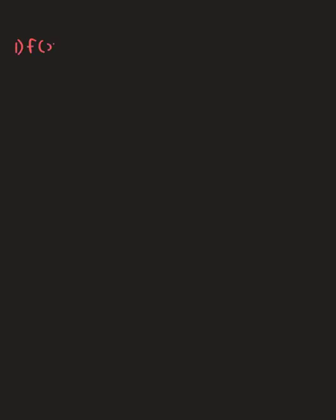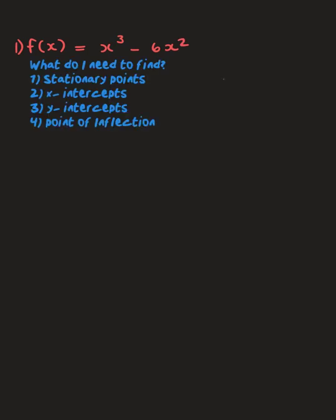The first graph we're going to draw is f(x) = x³ - 6x². To draw this graph we need to find four things: stationary points, x-intercepts, y-intercepts, and point of inflection. I like to first determine the first and second derivative using the power rule. The first derivative is 3x² - 12x, and we'll use that to find stationary points; the second derivative we'll use for the point of inflection.